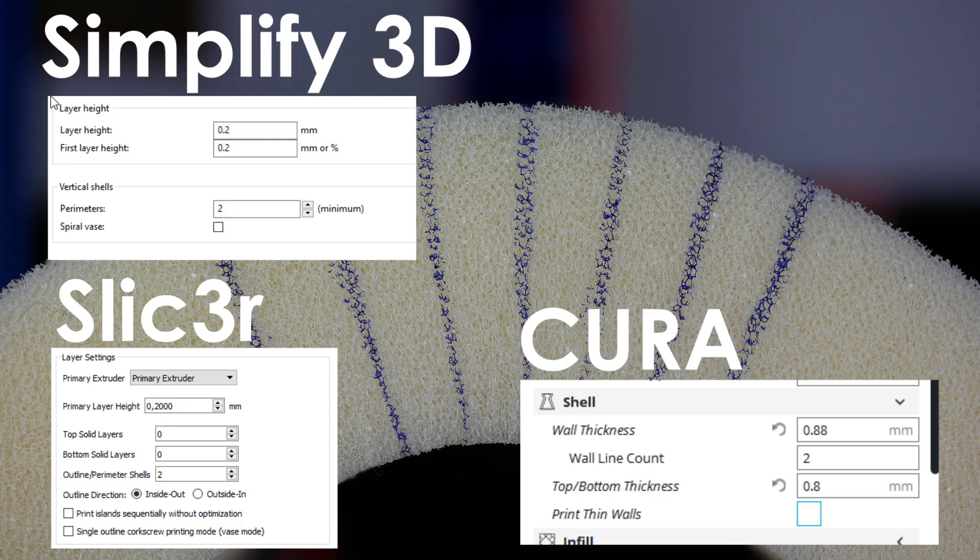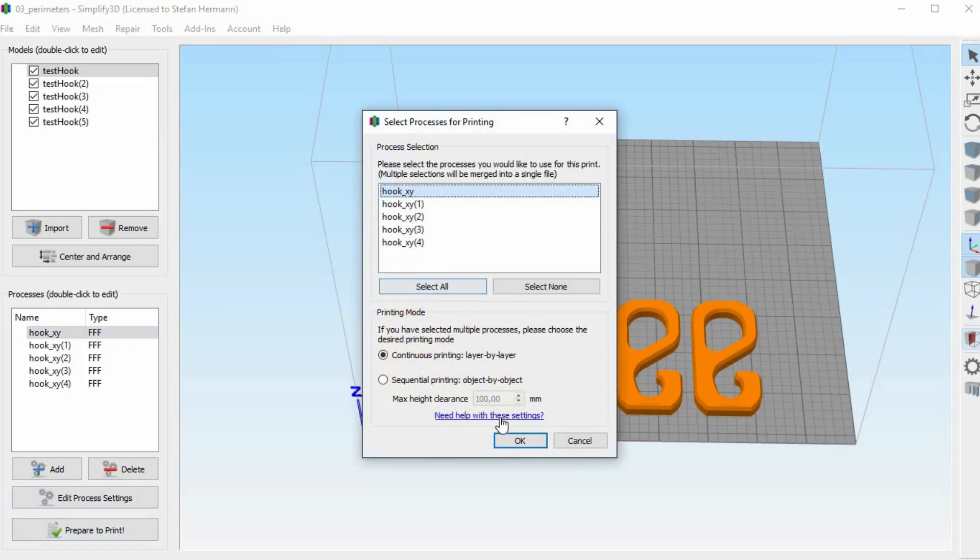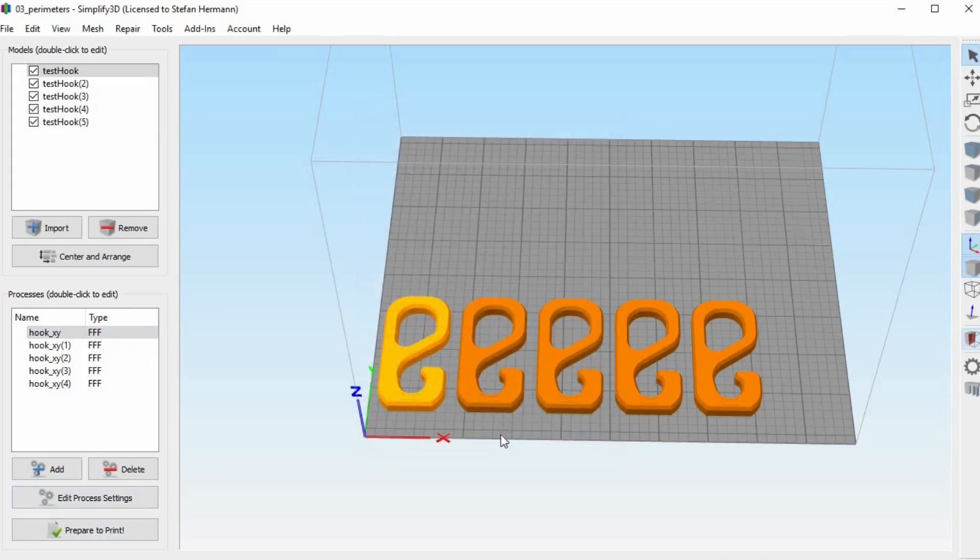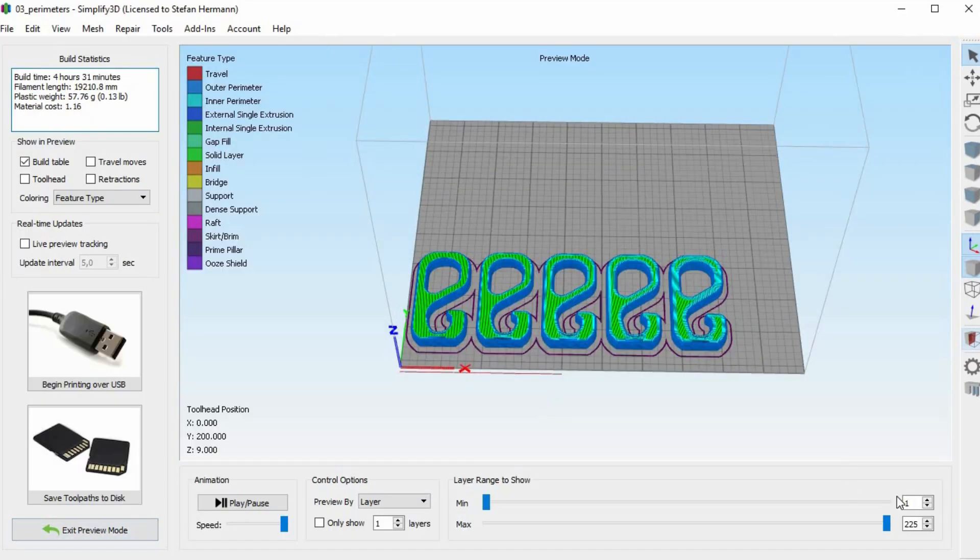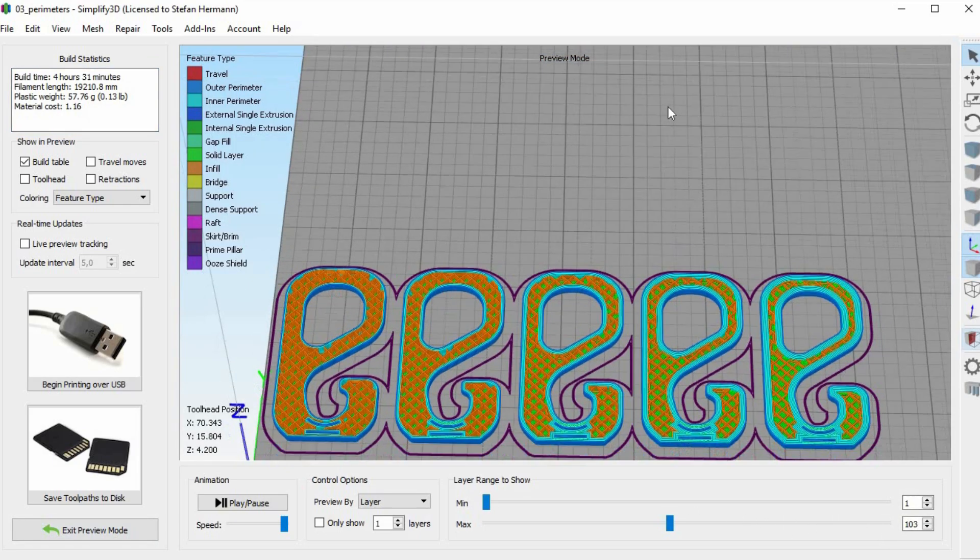Which thickness we can adjust with the number of perimeters, shells, wall thickness or similar. In order to find out how this affects the strength of our hooks I printed more samples with two to six shells and only a moderate 15% infill. I also increased the number of top and bottom layers to get a constant wall thickness of my part.